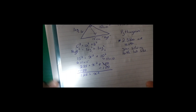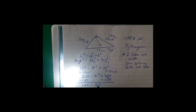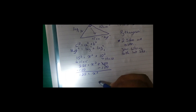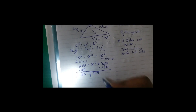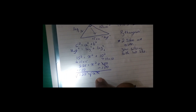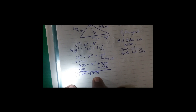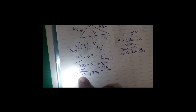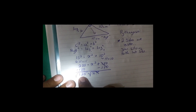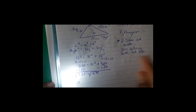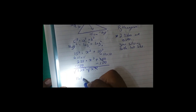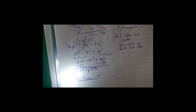Notice that we're solving for X, not X squared. In mathematics, to get rid of the square, we square root both sides. The square and the square root cancel off, leaving us with X. Square root of 125 gives us approximately 11.18, to two decimal places.